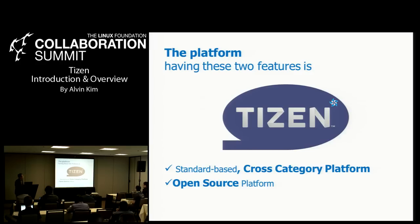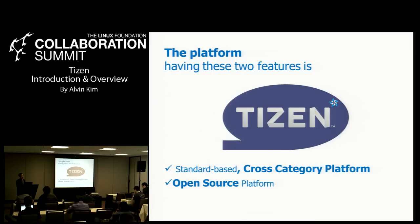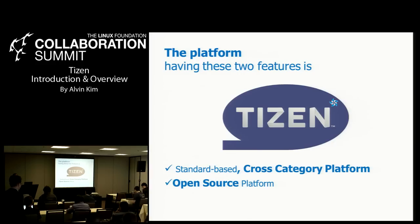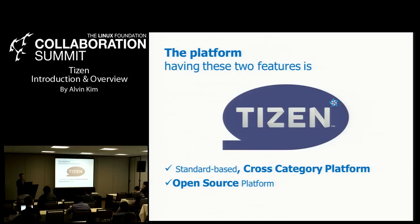The platform having these two features is Tizen. This is quite a unique position of the Tizen platform today. In short, Tizen is a standard-based cross-category platform and it is also open source. We have more than 1,000 bits in Tizen 2.0 and many of them are from open source. We will open as many modules as possible, so please contribute to the Tizen platform.